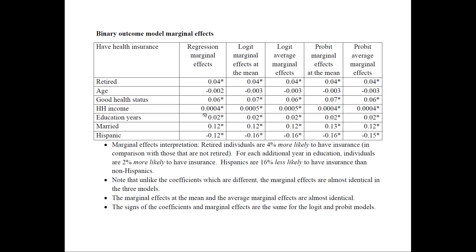For a continuous variable, for each additional year of education, individuals are 2% more likely to have insurance. You could also say that Hispanics are 12% less likely to have insurance than non-Hispanics. One very important point: use 'more likely' and 'less likely,' not just 'likely,' because they may still not be likely to have insurance overall. Only 39% of people have insurance, so they're not likely on the whole — but if you're retired, you're 4% more likely than that base of 39%.